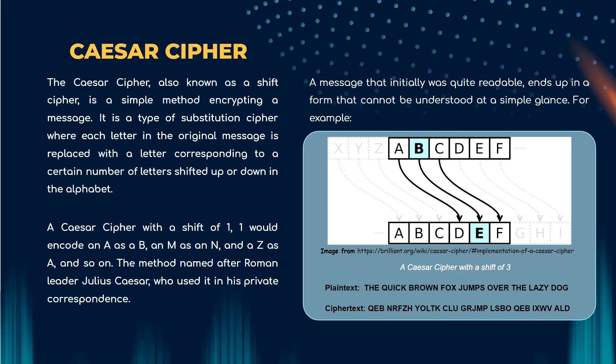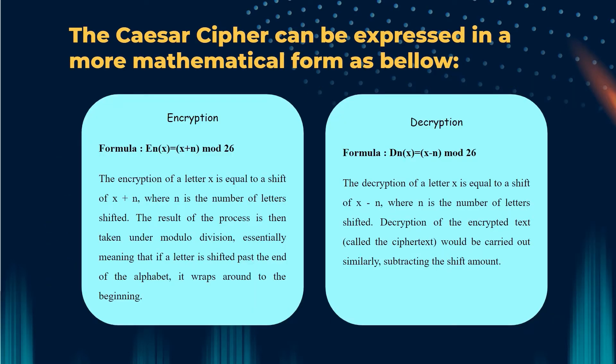For example, in the picture below, we can see that it's a Caesar cipher with a shift of three. So the plaintext is the quick brown fox jumps over the lazy dog. The ciphertext cannot be read, which is QEB NRFZH YOLTK CLU GRJMP LSBO QEB IXWB ALD.